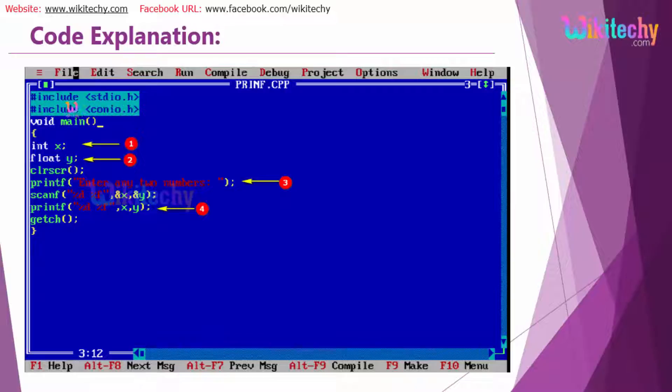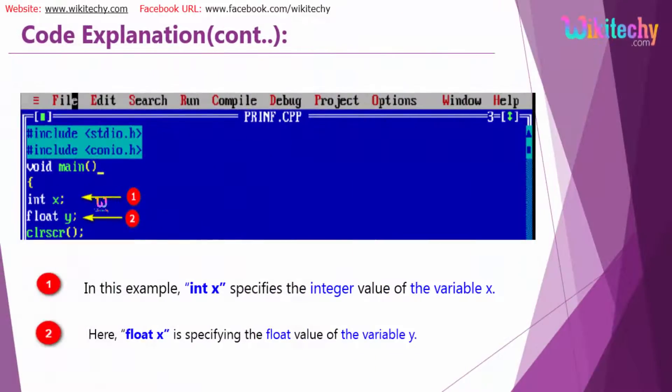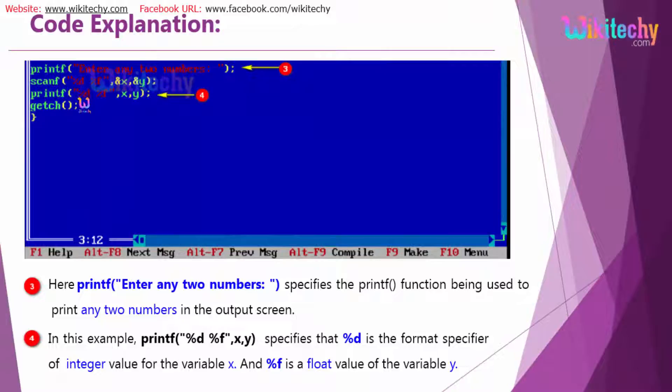Here is the program. You will be getting the program here, sample program. And here is the explanation. This is variable declaration. x is integer and y is float. And here is the output. I am taking the input through scanf. I am trying to print it. This is printing out the input values.